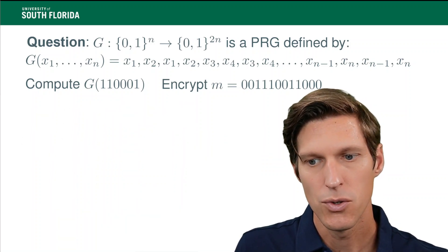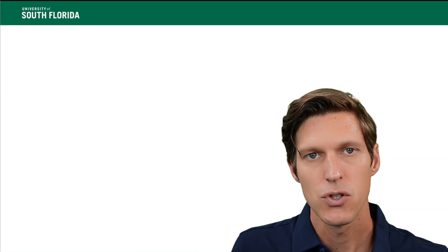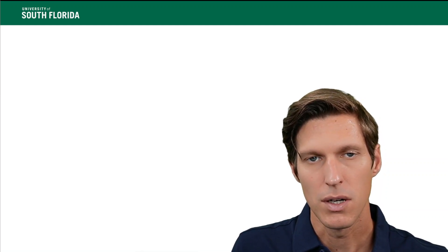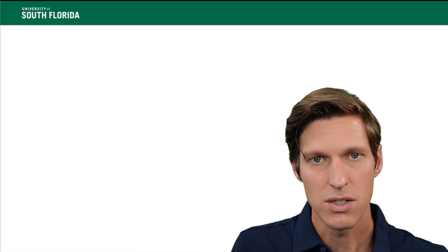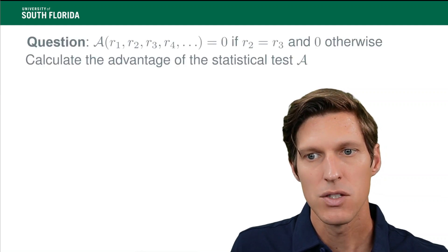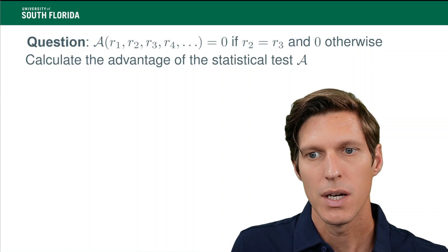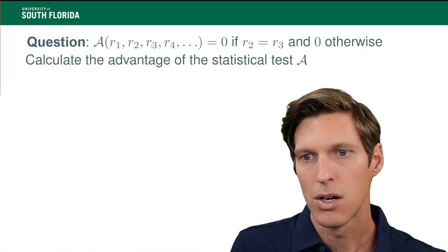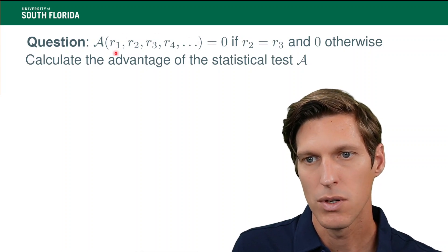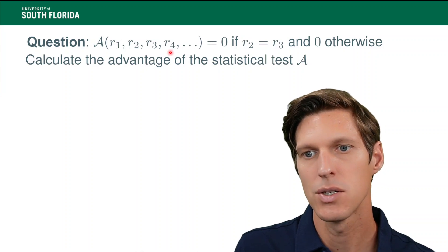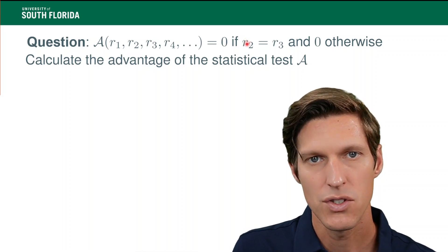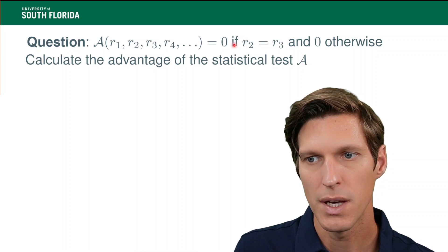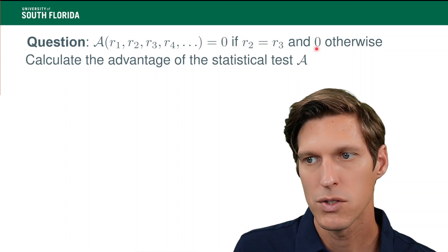Now let's move on to a concrete definition of security. Two ways of looking at the security of pseudorandom generators are covered in our class. One is to use a statistical test. A statistical test is a function of input that has the size of the key stream — so here we have 2n bits. The output is 0 if a certain condition is satisfied. For example, here the statistical test checks if r2 equals r3, then outputs 0; otherwise it outputs 1. Excuse the typo here.